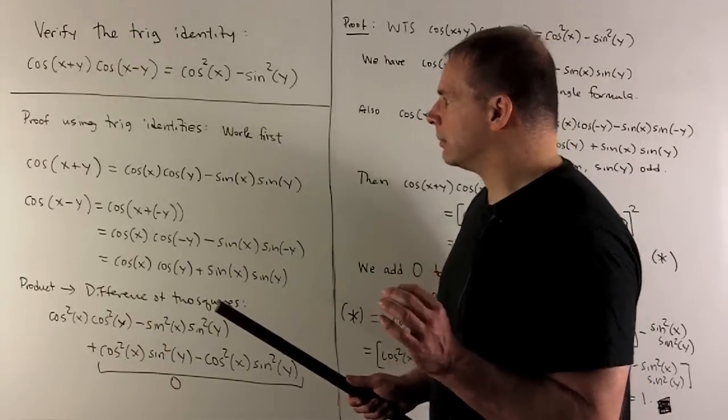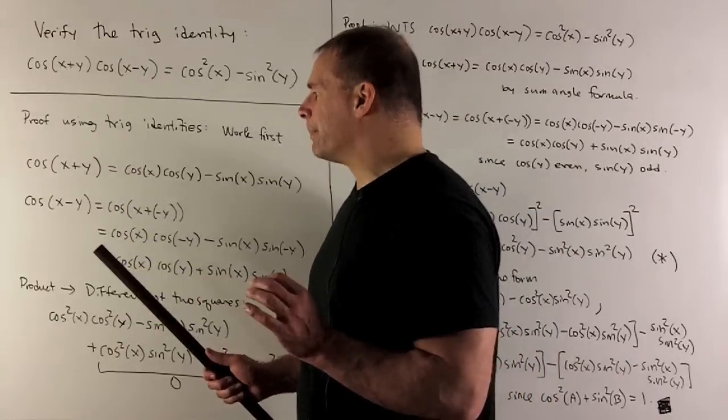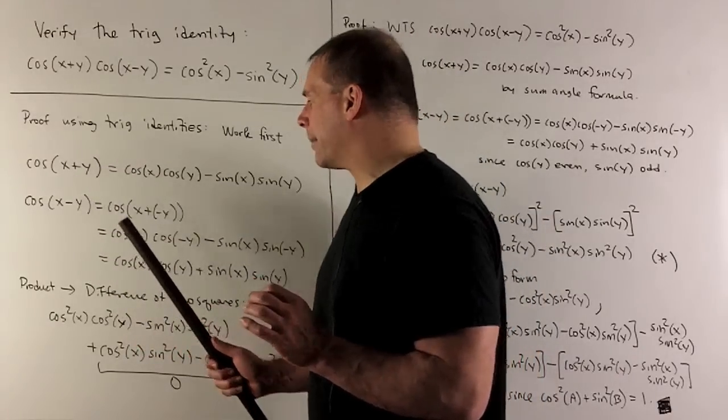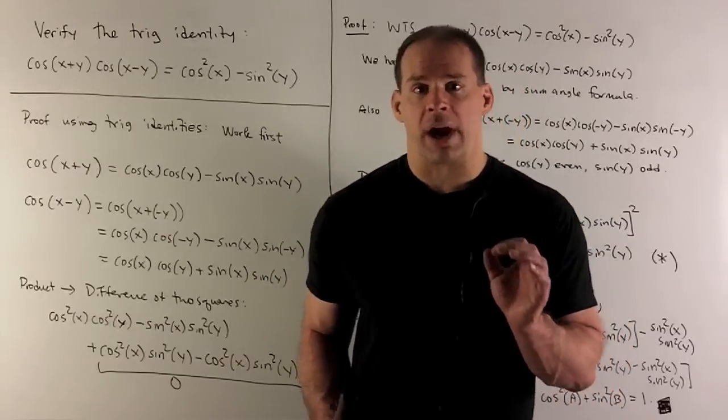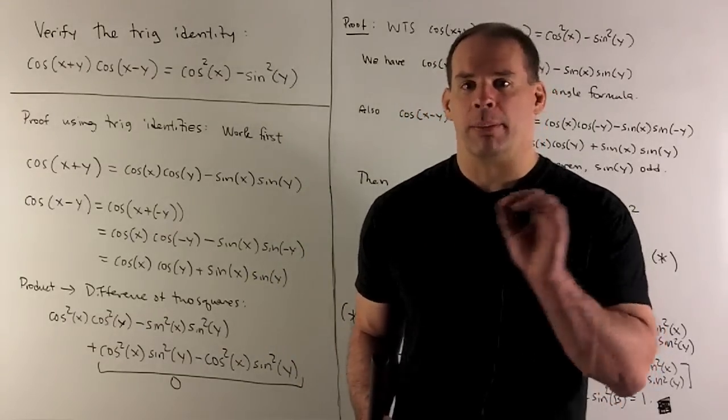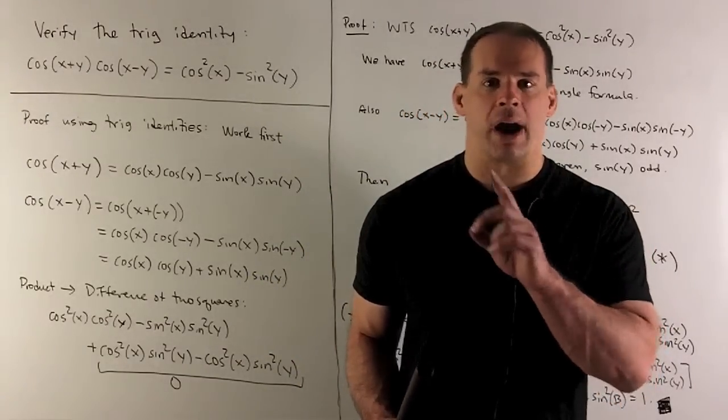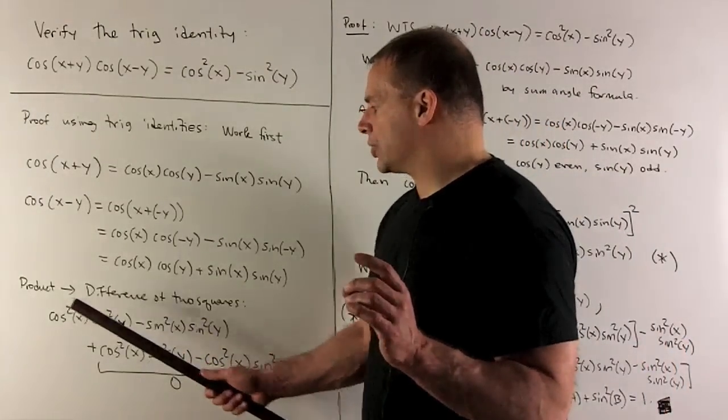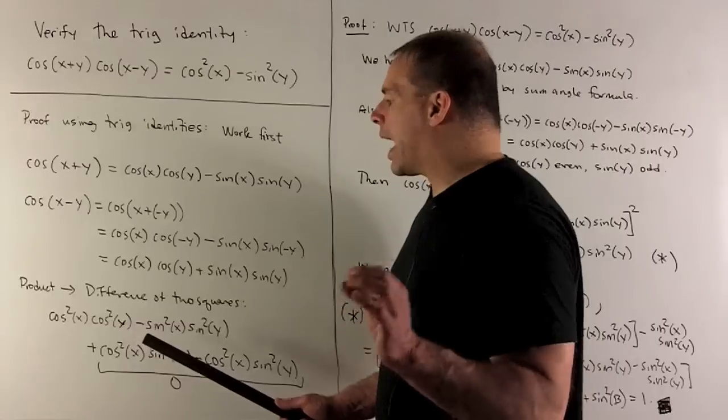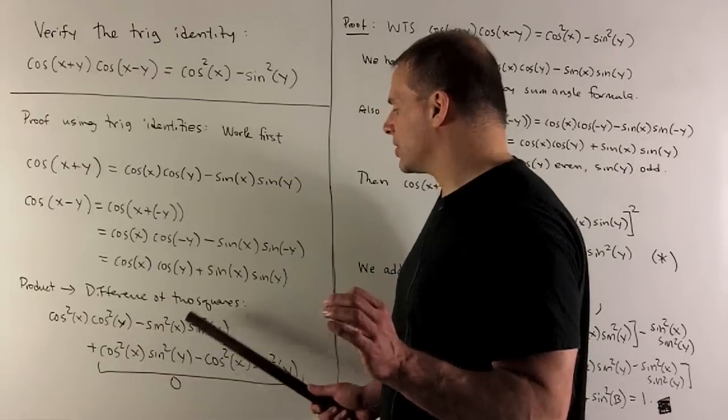Now, if you notice, cosine x plus y times cosine x minus y. If you observe what kind of terms we have, we have a difference of two squares here. So, I don't have to do a big multiplication. I could just square and then take the difference. So, all we're looking at is going to be cosine squared x, cosine squared y, minus sine squared x, sine squared y.